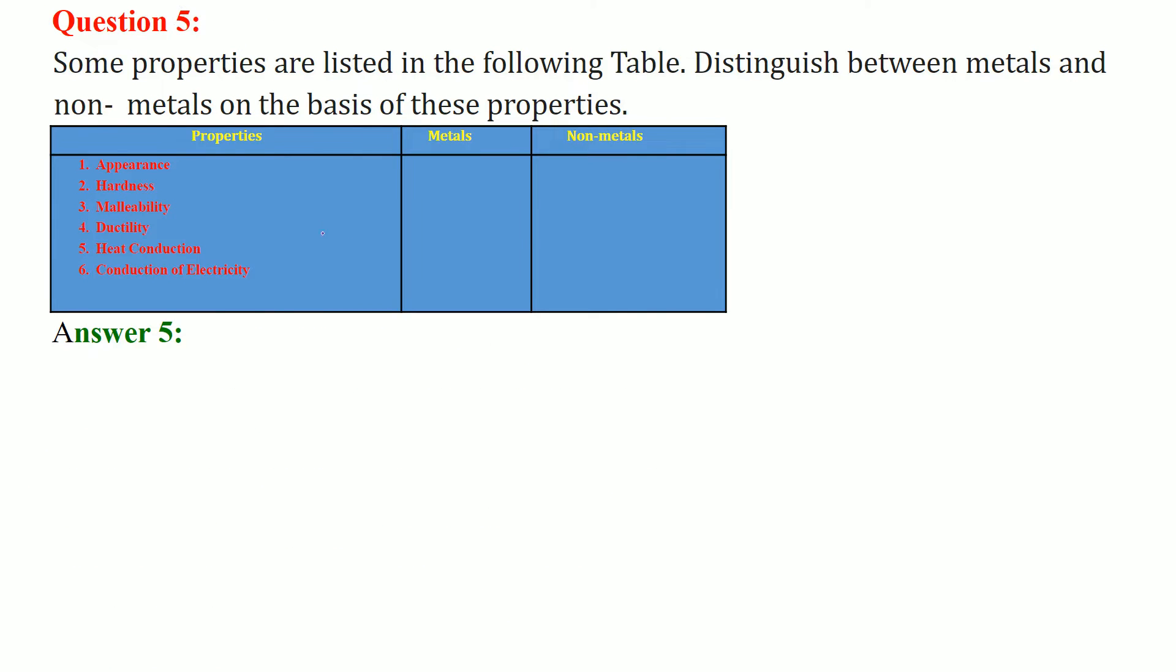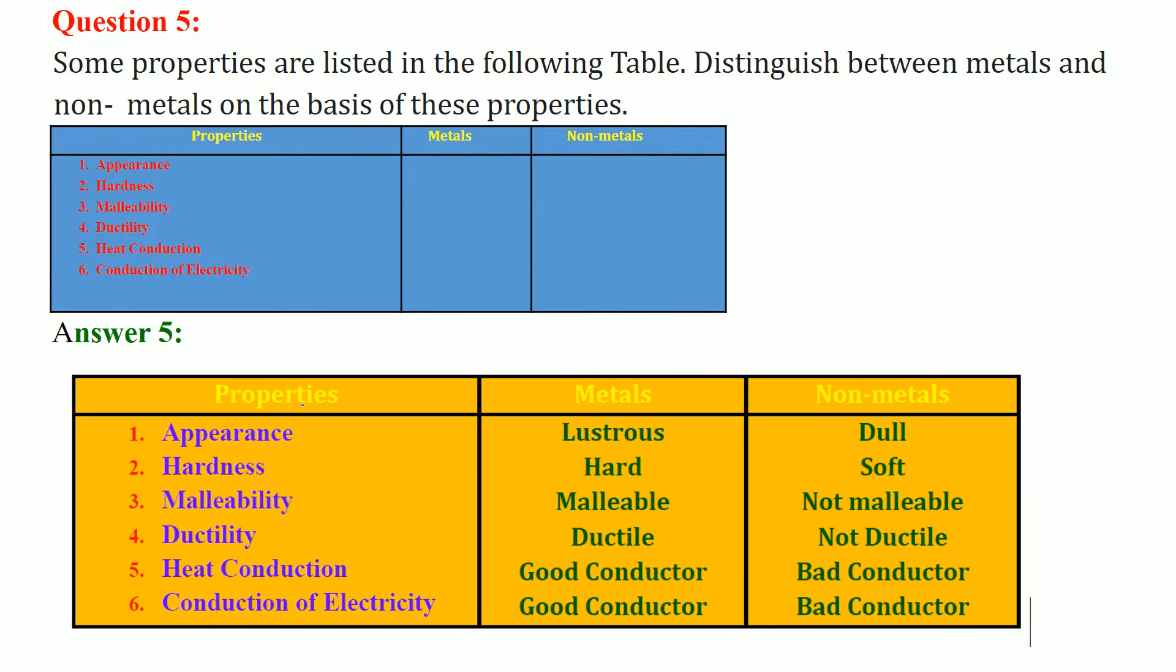Some properties are listed in this table. We need to distinguish between metals and non-metals on the basis of these properties. Appearance: metals are lustrous, non-metals are dull. Hardness: metals are hard, non-metals are soft.